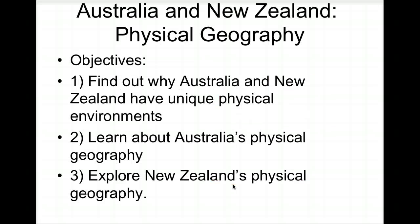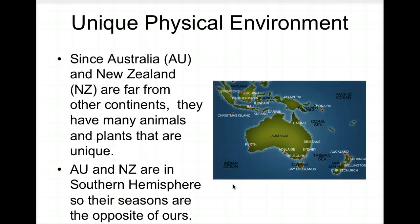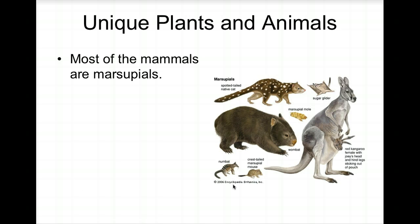The second section covers Australia and New Zealand's physical geography. We'll find out why they have unique physical environments. Since Australia and New Zealand are far away from other continents, they have many special plants and animals. They're also in the Southern Hemisphere, so their seasons are opposite to ours — it's coming up on springtime there right now.